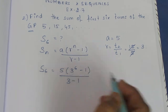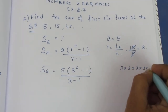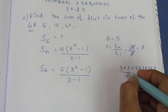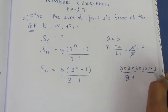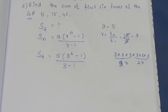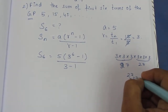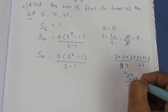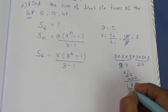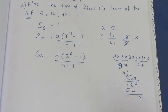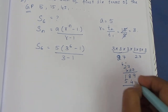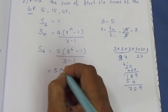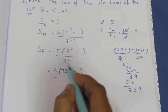Now we compute 3^6: 3 × 3 = 9, 9 × 3 = 27, 27 × 3 = 81, 81 × 3 = 243, 243 × 3 = 729. So 3^6 = 729. Then 729 minus 1 gives 728, divided by 3 minus 1, which is 2.